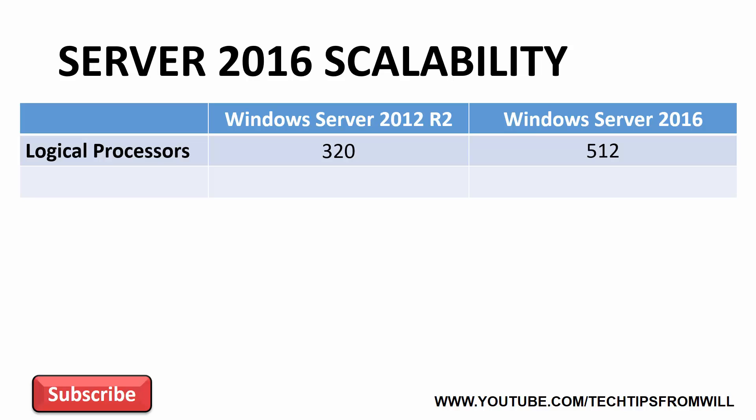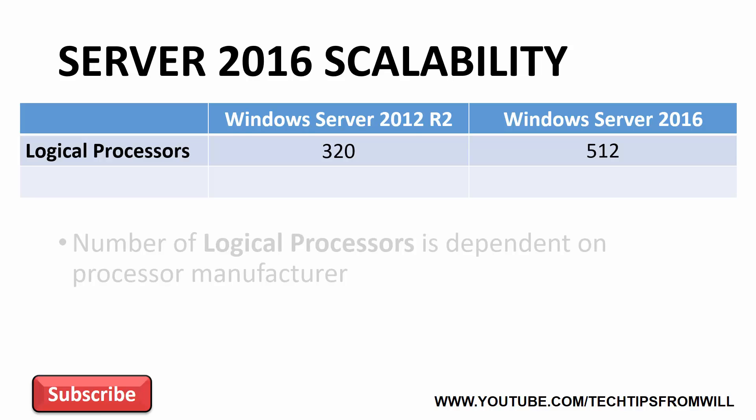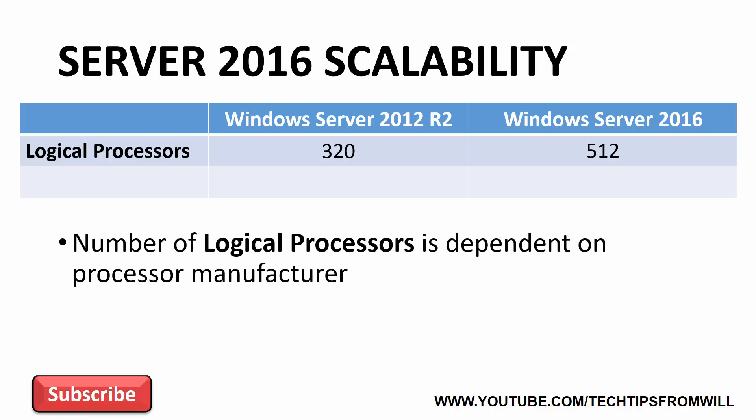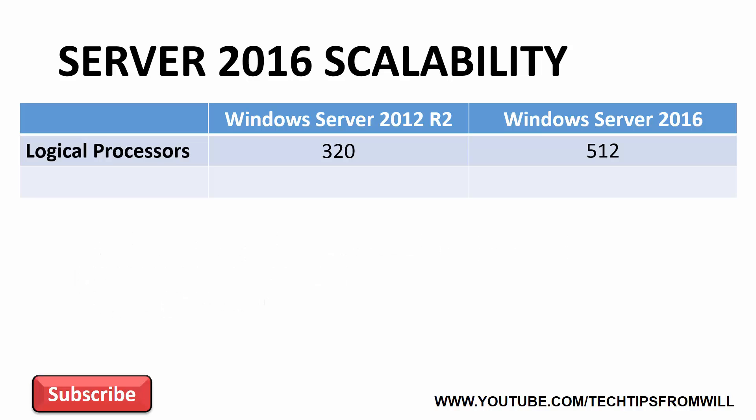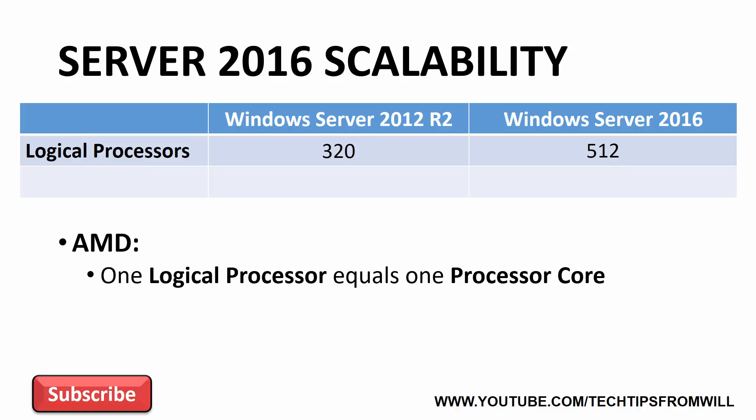But how do you determine the number of logical processors in your system? The number of logical processors you have will depend entirely on which processor manufacturer you're using — AMD or Intel. If you're using an AMD processor, calculating logical processors is quite easy. In the AMD world, one logical processor is equal to one processor core.